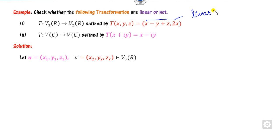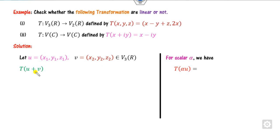So it may or may not be a linear transformation. Consider two elements from V3: x₁, y₁, z₁ and x₂, y₂, z₂. We can start with U plus V and alpha U. If both properties are satisfied, then it is a linear transformation, otherwise not. U plus V also belongs to V3 of R.